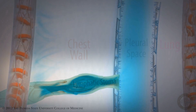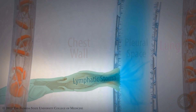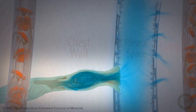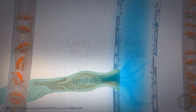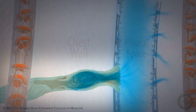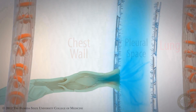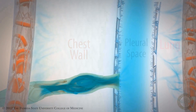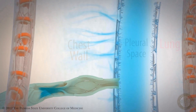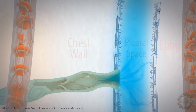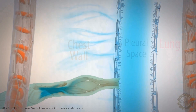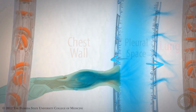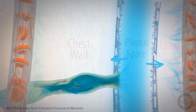The stomas stretch during inspiration and allow cells, cell debris, and other particulate products through. It's been recently discovered that fluid absorption from the pleural space also occurs as a result of what's called electrolyte coupling through the mesothelial surfaces of both the parietal pleura and the visceral pleura.